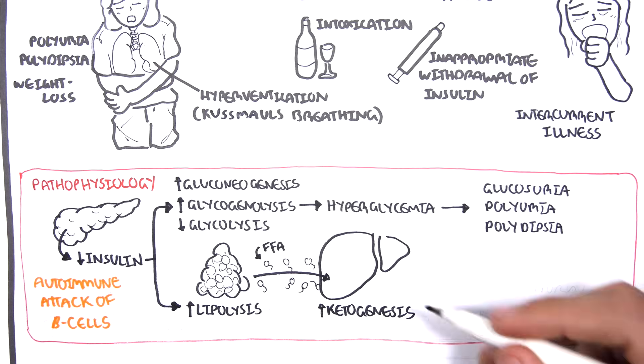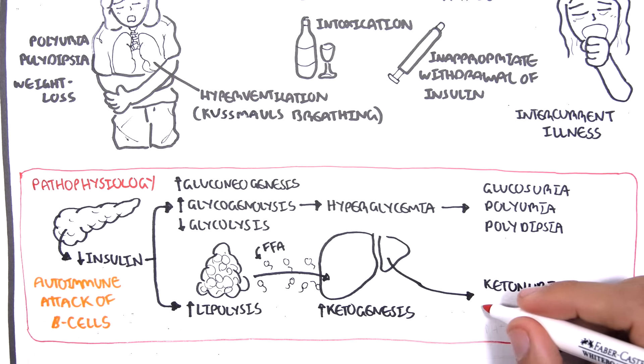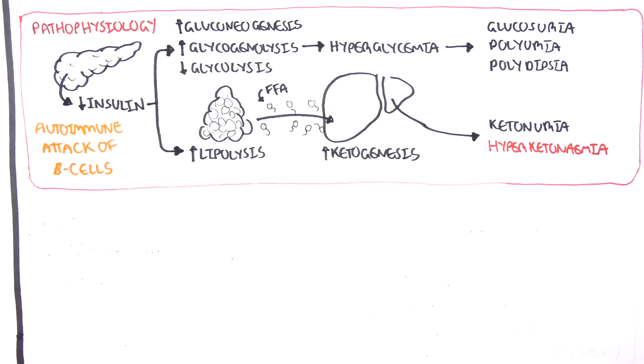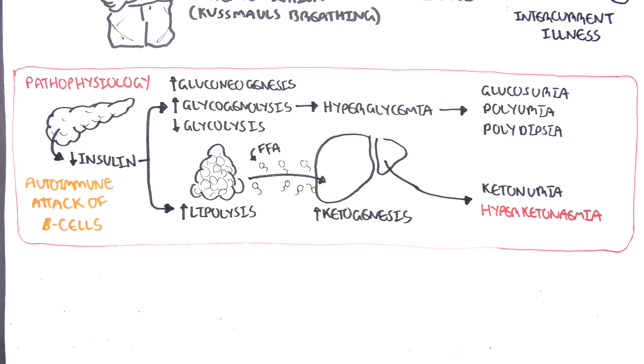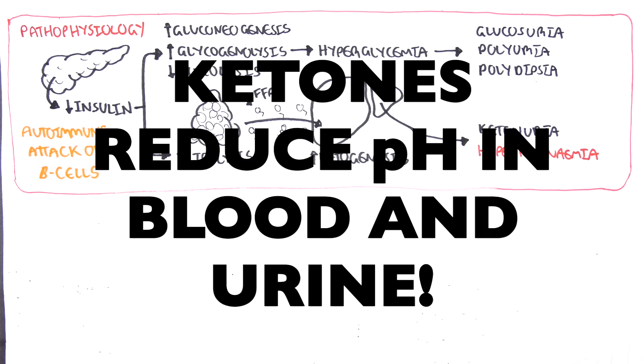With so much ketones being made, we get ketonemia. We get high ketones in the blood. And then subsequently, this means that we get ketonuria. We are peeing out ketones. And it's also important to know that ketones are acidic. Ketones are acids. And so they reduce the pH in the blood, but also they will reduce the pH in urine.